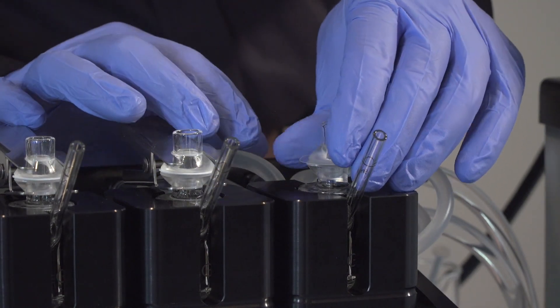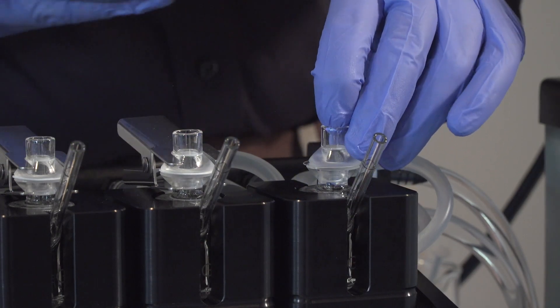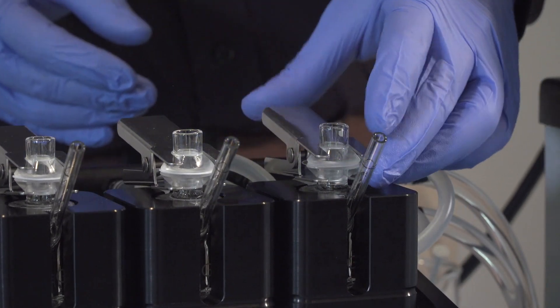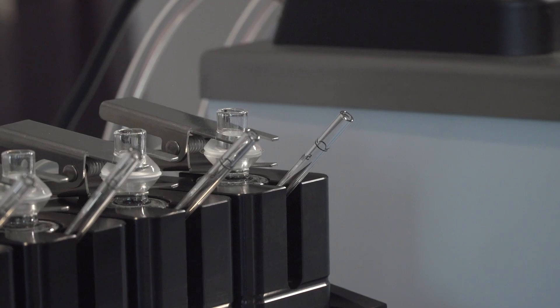For permeation testing, membranes are typically human or porcine skin. They can also be a skin substitute such as Strat-M or Permeapad. For release testing, the use of various membrane filters is common.